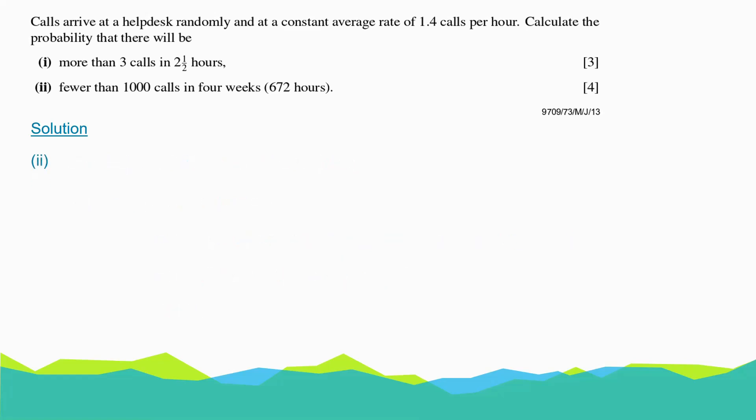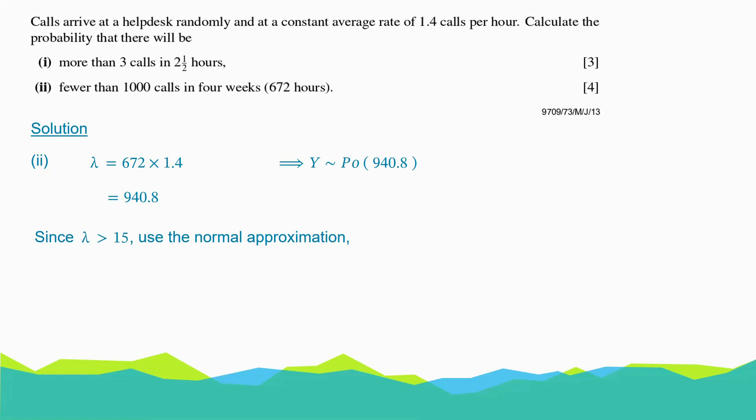For part two, calculate the probability that there will be fewer than a thousand calls in four weeks, which is 672 hours. There's an interval change: originally 1.4 calls per hour, so for 672 hours, lambda equals 672 times 1.4, which is 940.8. The random variable Y follows a Poisson distribution of mean 940.8. Since 940.8 is greater than 15, we use a normal approximation: Y follows a normal distribution of mean 940.8 and variance 940.8.